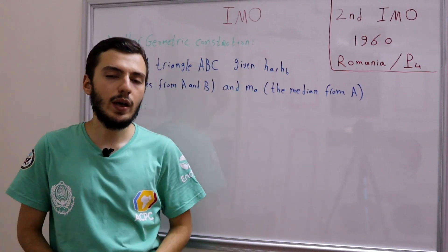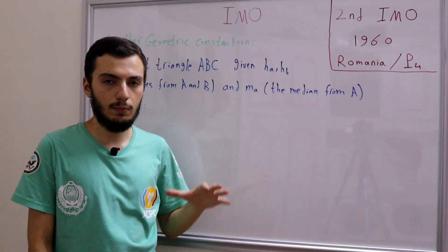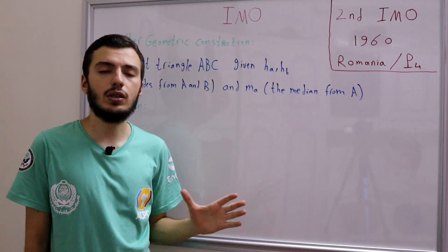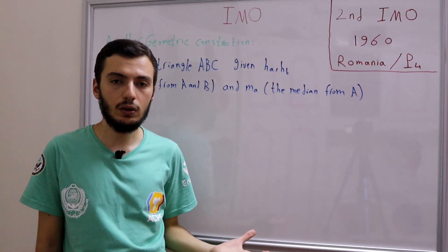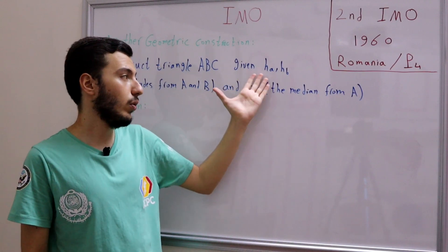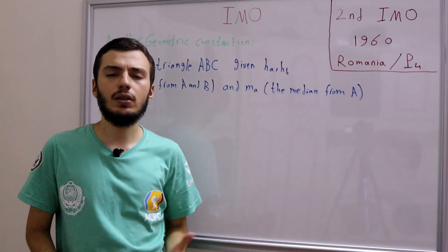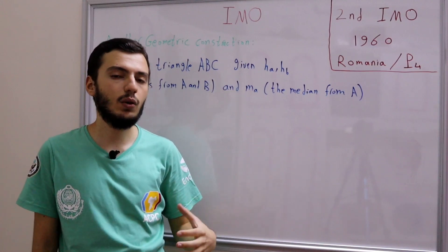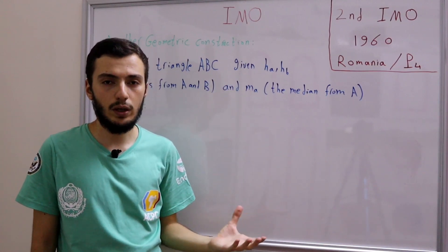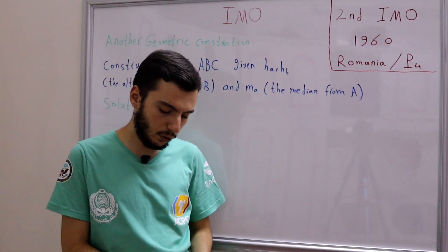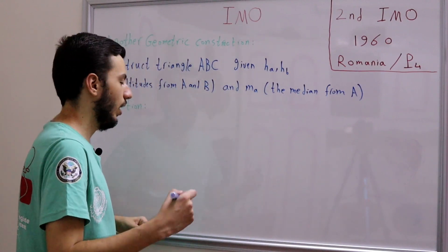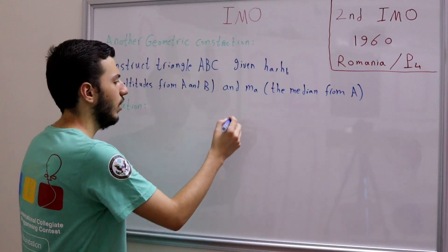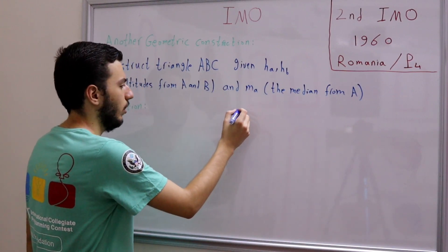As we agreed before, we don't immediately start by finding a way to construct. First we assume that we have such a triangle, draw the altitudes and medians, and conclude some relationships that will help us find a way to construct the triangle. So let's assume we have such a triangle ABC and draw a diagram.